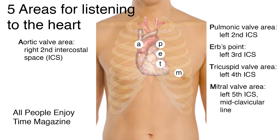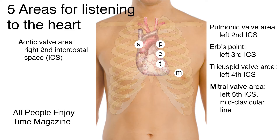The aortic valve area is on the right side at the second intercostal space. The pulmonic valve area is located on the left side at the second intercostal space. Erb's point is at the left third intercostal space. The tricuspid valve area is at the left fourth intercostal space. And the mitral valve area is at the left fifth intercostal space at the midclavicular line.